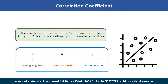The correlation coefficient, denoted by r, gives us a measure of the strength of the linear relationship between two variables. The value ranges from minus 1 to plus 1. If r is less than 0, it implies negative correlation, and minus 1 indicates the strongest negative correlation. If r is greater than 0, it implies positive correlation, with plus 1 being the strongest. When r equals 0, there is no correlation between the variables.